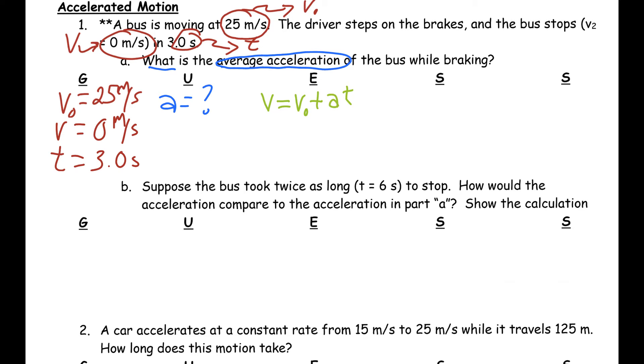We cannot use that formula the way it's written, because we're not looking for V, because we already know what V is. What we don't know is A, and A happens to be right here. So, to solve for A, what you're going to have to do is isolate it. And the way to isolate it is to subtract both sides by V₀. And that'll give you V minus V₀ equals A times T. And then your last step will be to divide both sides by T. So, I'm left with A equals V minus V₀ over T.